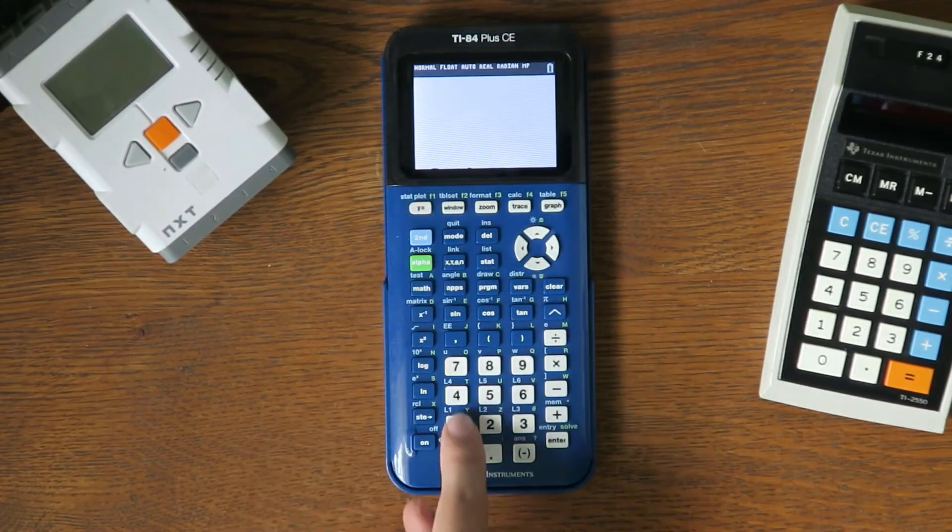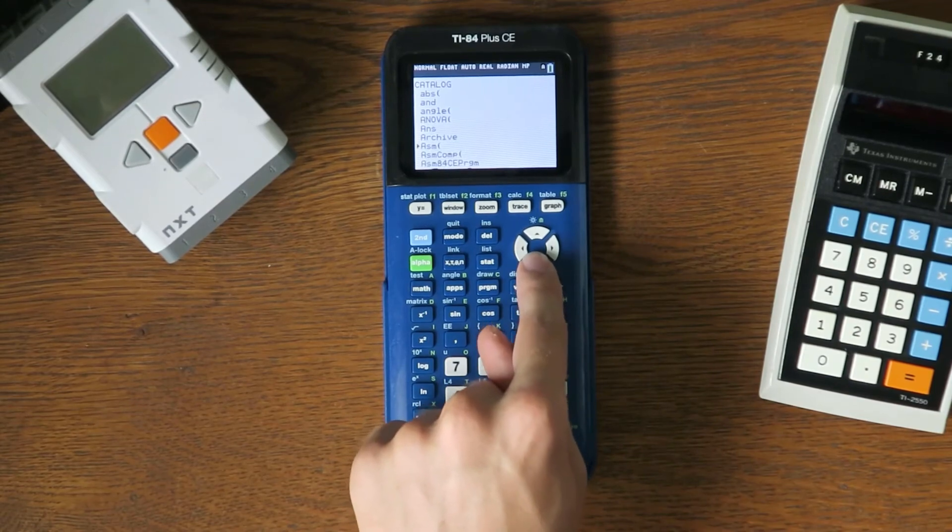Press 2nd, then 0, then scroll down to ASMCOMP, and press Enter.